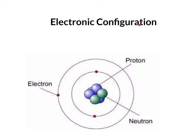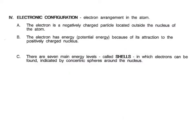Let's look at the electronic configuration of atoms. That means where are the electrons, which layers are they in. When we look at electronic configuration, we look at the electronic arrangement in the atom.